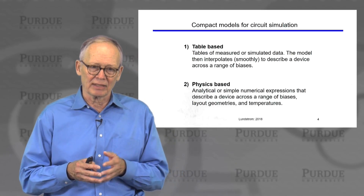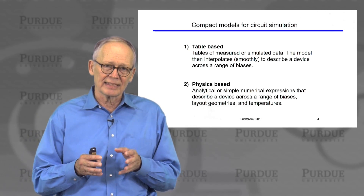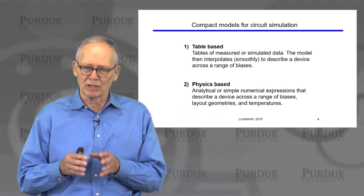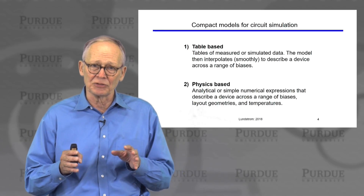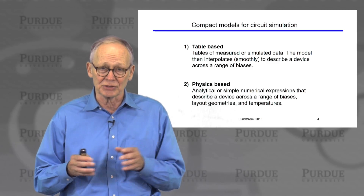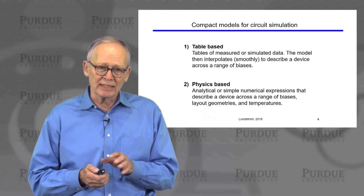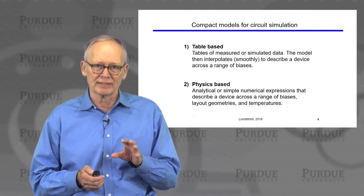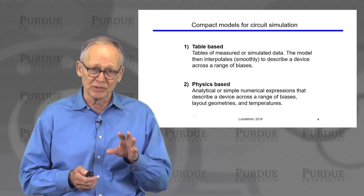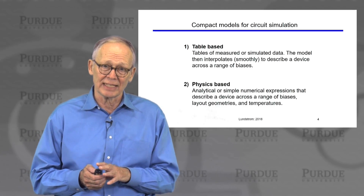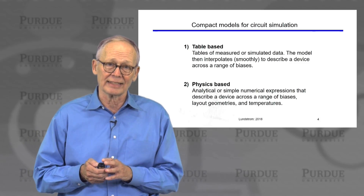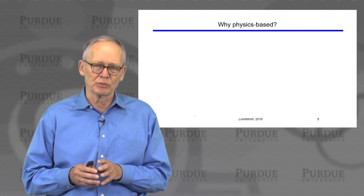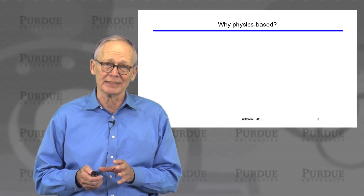A second type is the physics-based model — a set of analytical or simple numerical expressions that describe a device across a wide range of biases, layout geometries, and temperatures. Generally there's a role for each. Table-based models are quick to develop; if you're exploring early technology and can get some data, you can quickly produce a model. But for serious design, it's generally preferred that the model be physics-based.